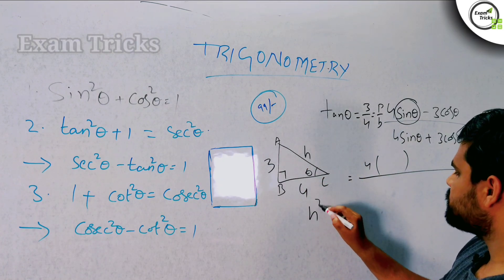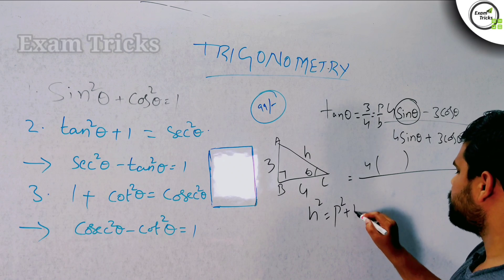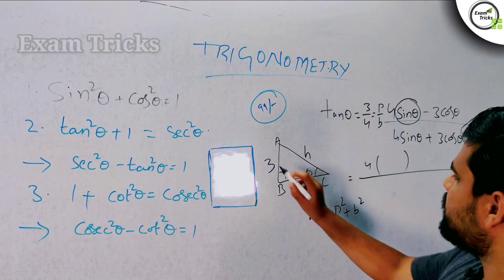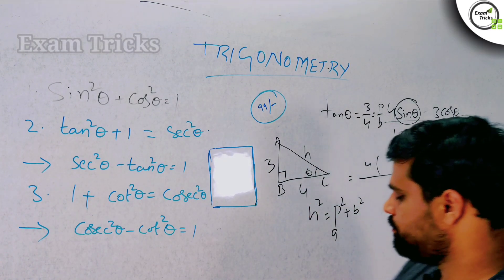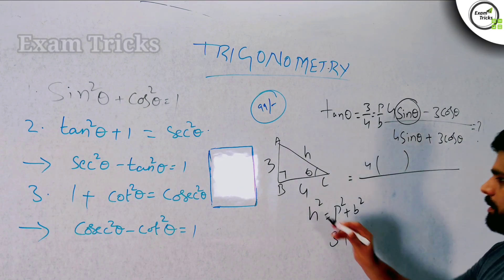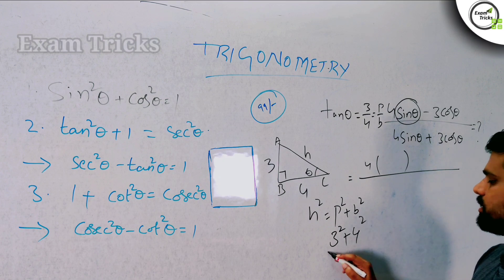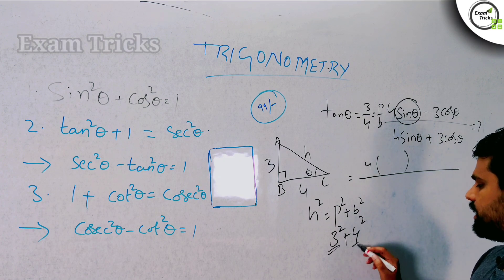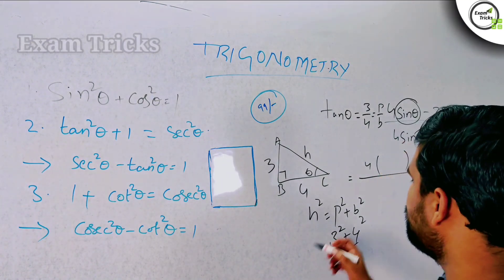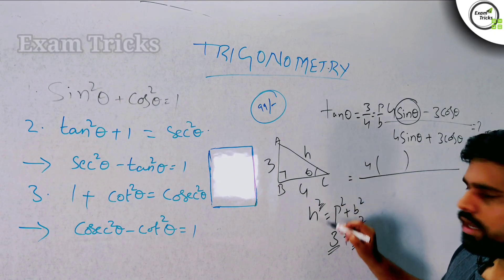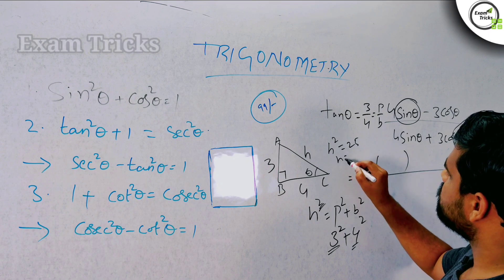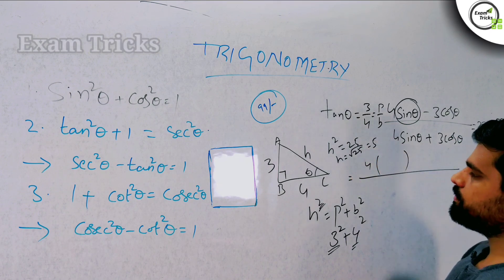Using Pythagoras theorem: hypotenuse² equals p² plus b². So p is 3 and b is 4. That gives 3² plus 4² equals 9 plus 16 equals 25. So h² equals 25, therefore h equals square root of 25, which is 5. So hypotenuse is equal to 5. The sides are 3, 4, and 5.